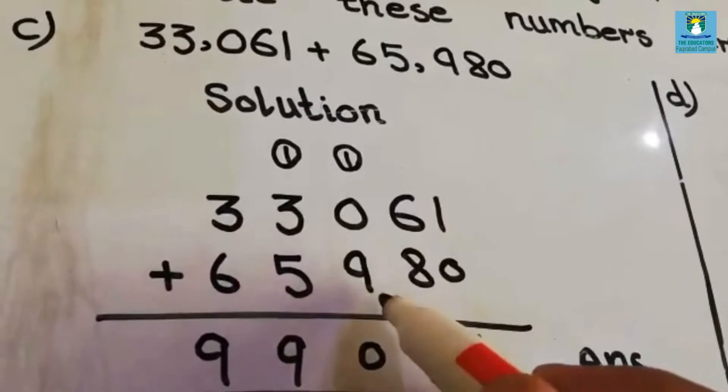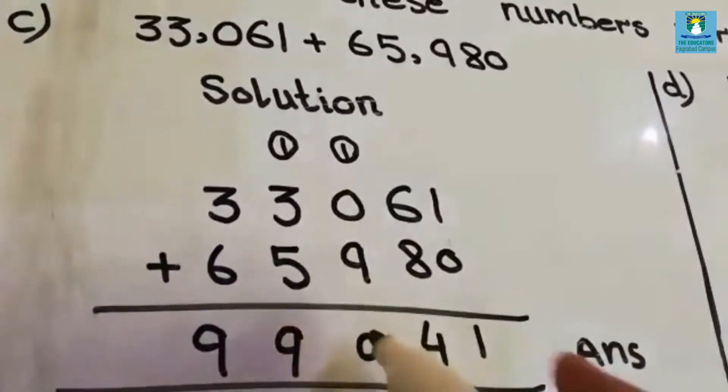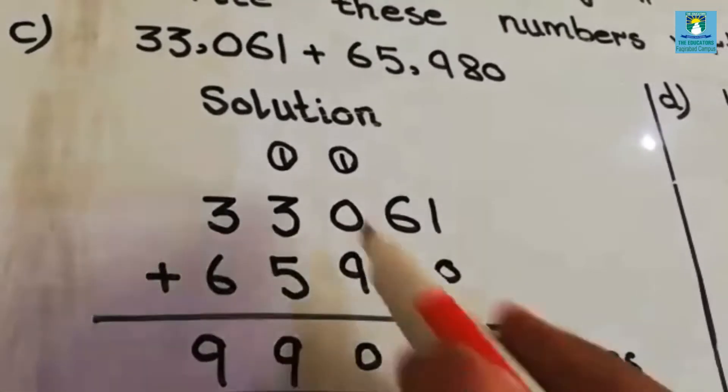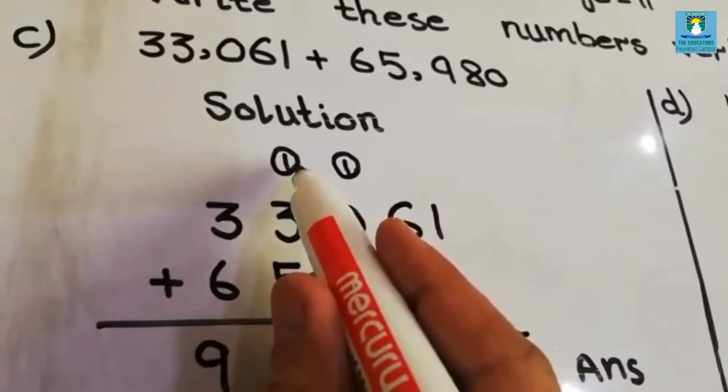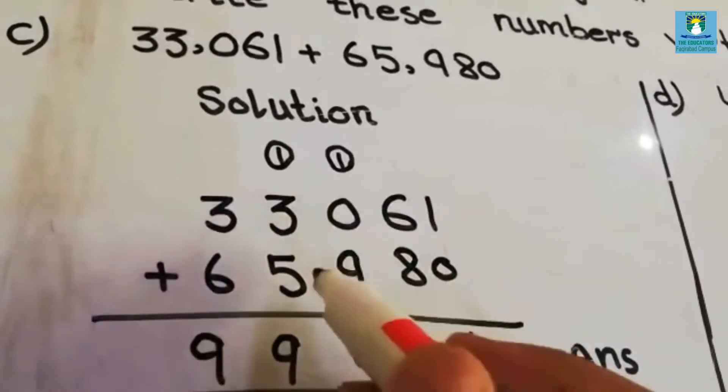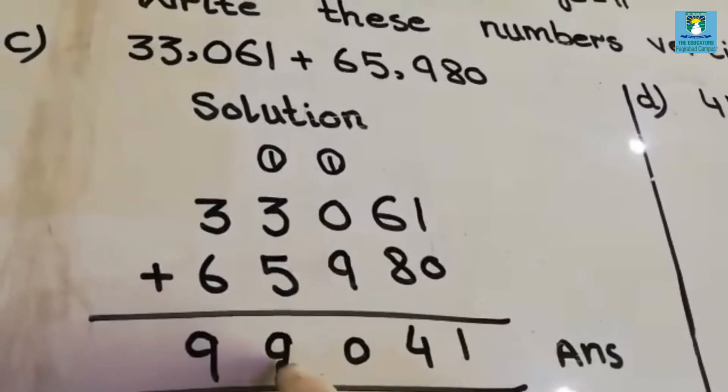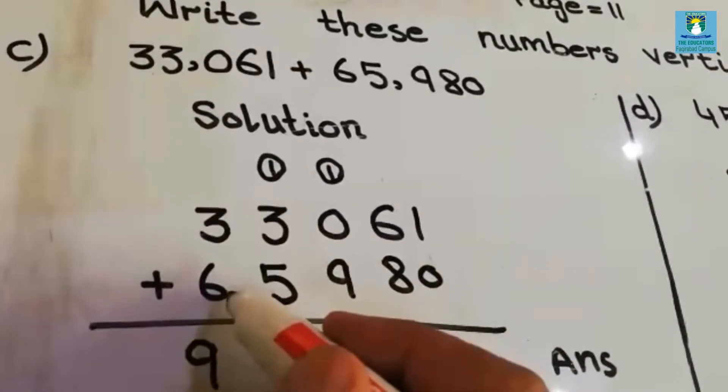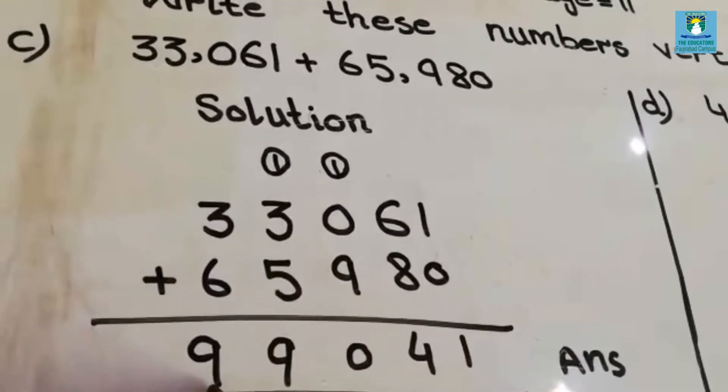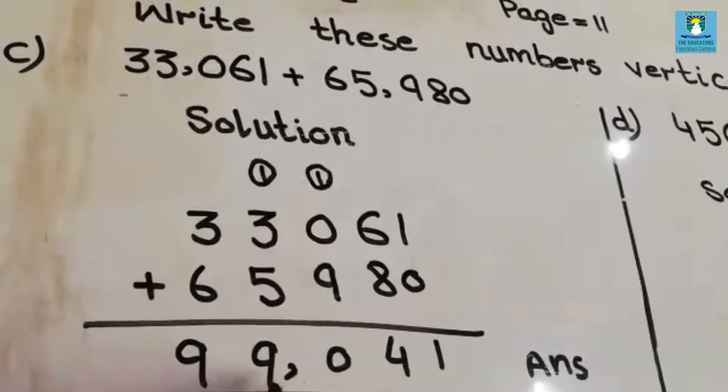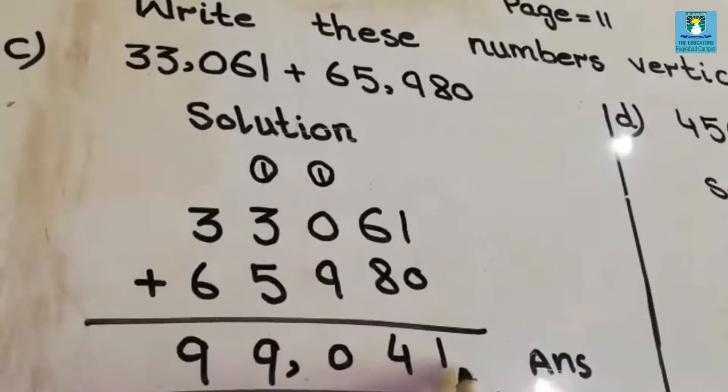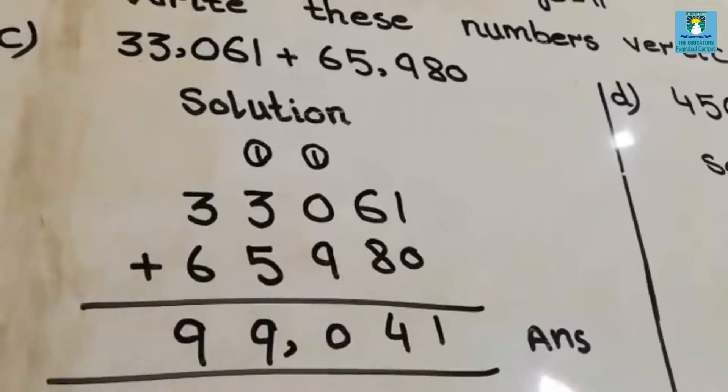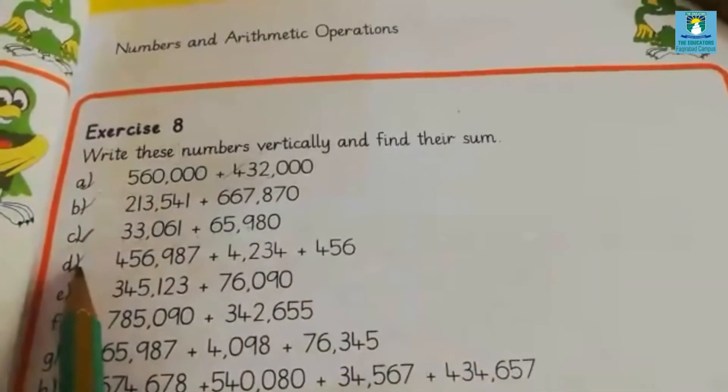Now we will add 9 plus 1 is 10. 0, 1 carry. 1 plus 3 is 4, 4 plus 5 is 9. And 3 plus 6 is 9. So 99,041 is your answer. The next part is part D.